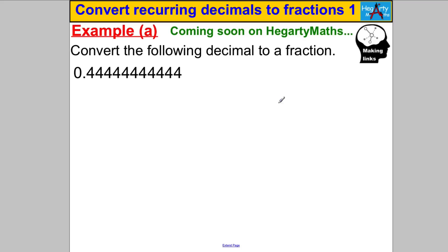Now we're going to convert recurring decimals to fractions using a little bit of algebra — it's not too advanced. To convert 0.4̄ to a fraction, we give it a letter name. Let's call it X, and write it out. We're going to do something really clever.